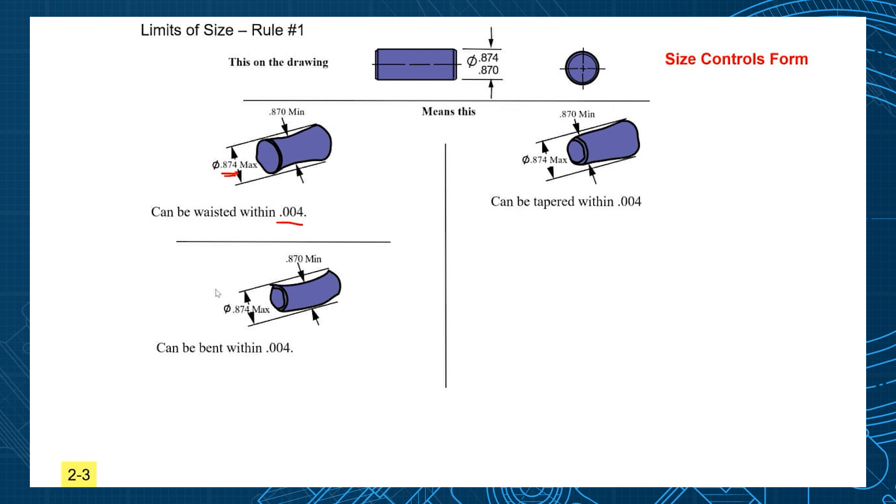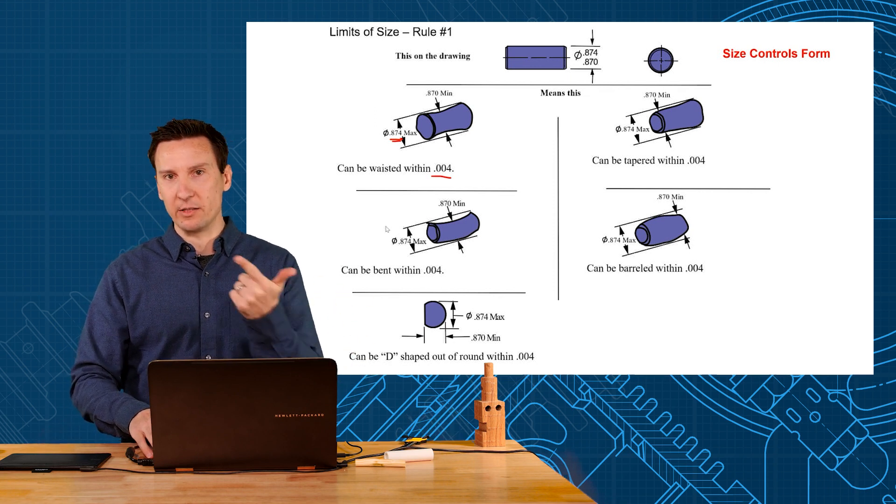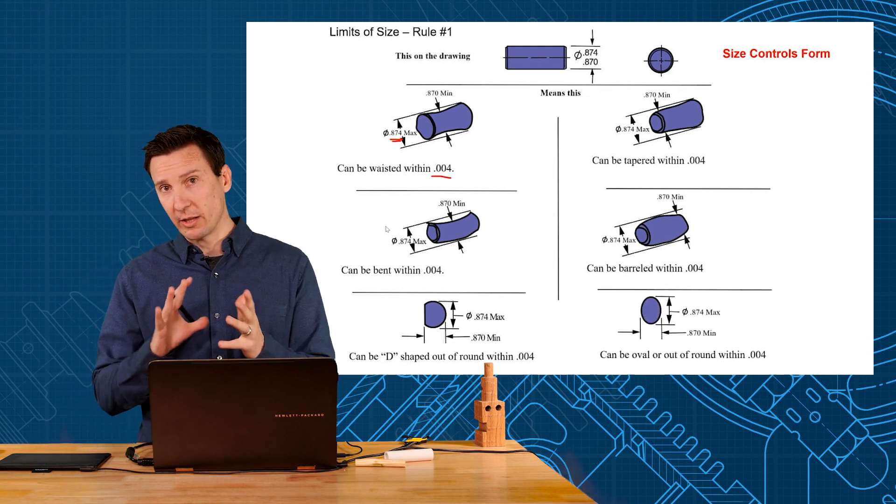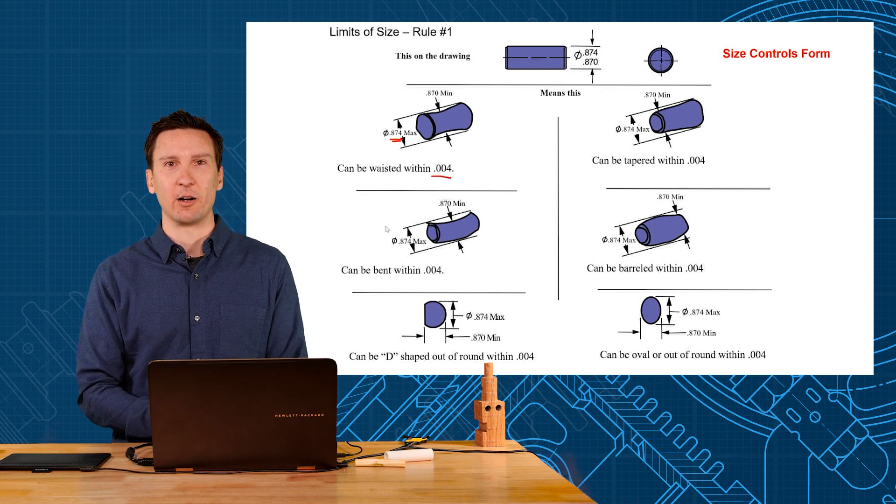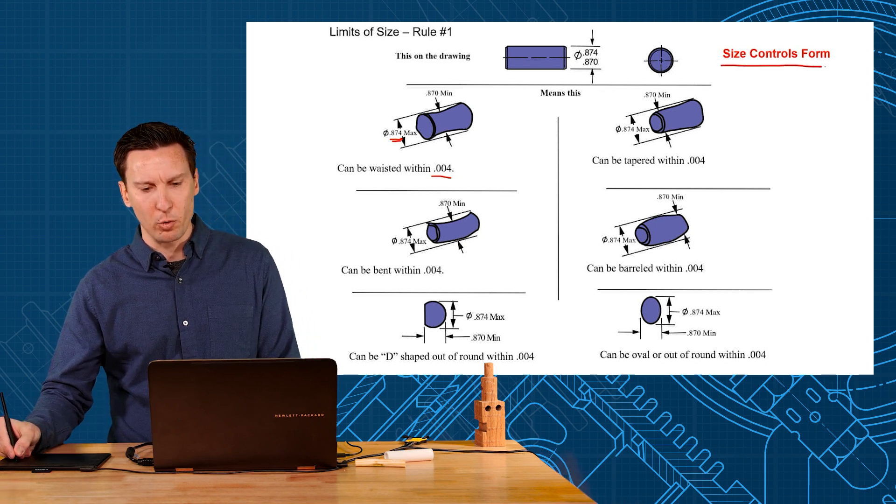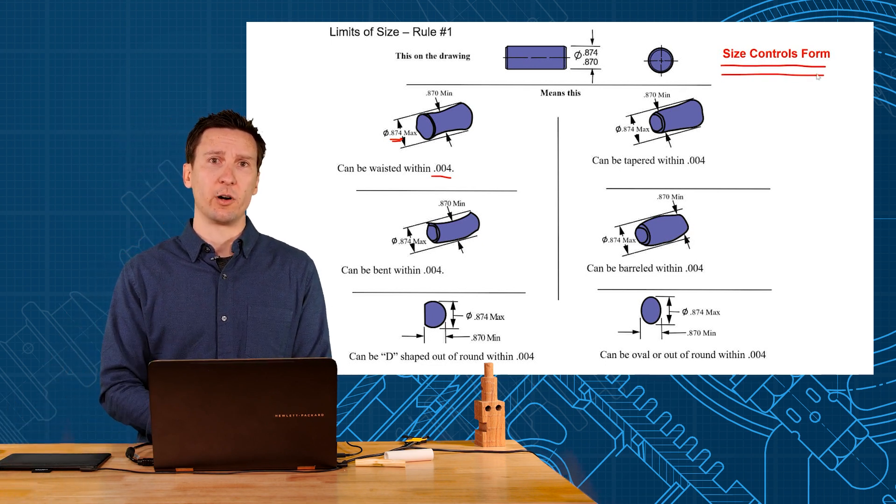My theme is that size controls form. So every form variation I could think about - the barreling, the wasting, the bending, the tapering, and even circularity problems like oval and D-shaped - that's all within the size tolerance. Size controls form is such a big important concept here, and that's because of our Rule Number One definition in our standard.